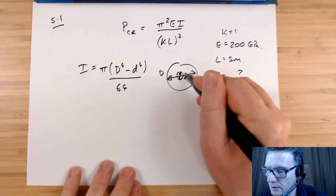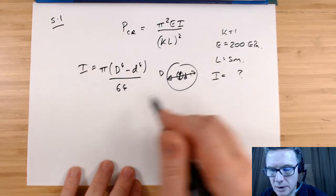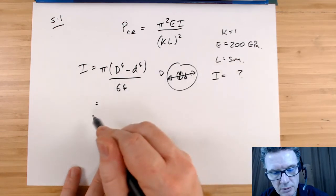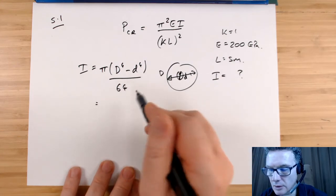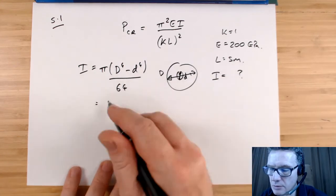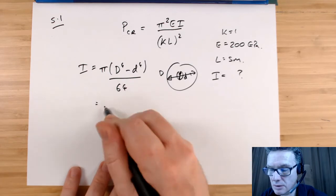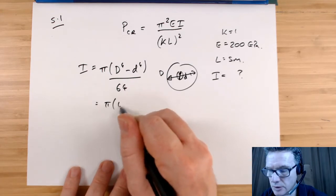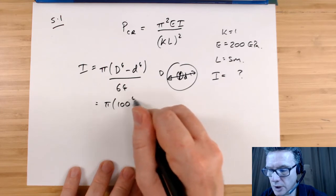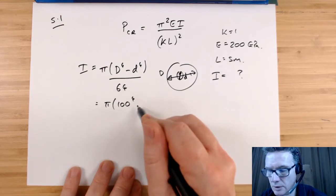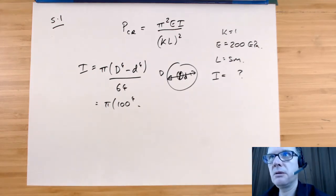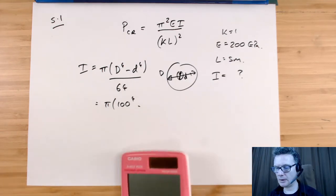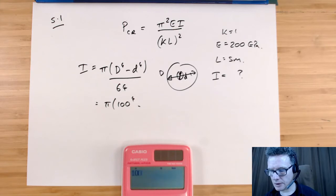We want to be working in SI units, so meters. So π times 100 to the power 4, big D to the power 4, take away the inner, that's 100 take away 16 twice.